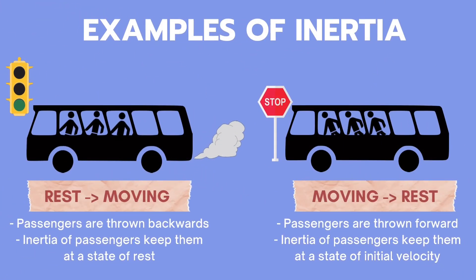Next, let's look at some examples of inertia in our daily life. Have you ever noticed that when you're in a car and it starts moving, your body will flung backwards? This is because of inertia. When a vehicle starts moving from rest, the passengers are usually thrown backwards because the inertia of the passengers keeps them at a state of rest. When the vehicle stops moving, it is observed that the passengers are thrown forward, because the inertia of the passengers keeps them moving at the same velocity as when the vehicle was moving.